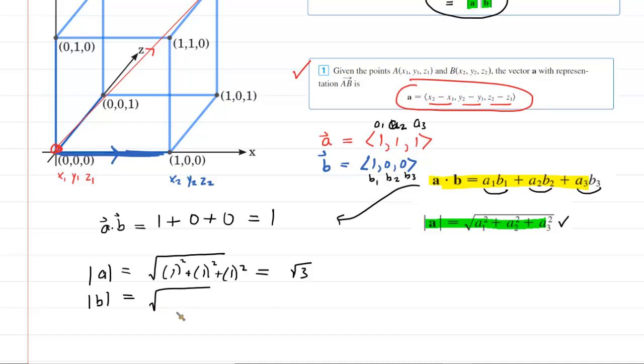And then for vector b, taking the square root of the sum of the squares of the components, it's going to be 1 squared plus 0 squared plus 0 squared. This will simplify to the square root of 1, which is just 1. We've got the dot product, the magnitude of a, and the magnitude of b.